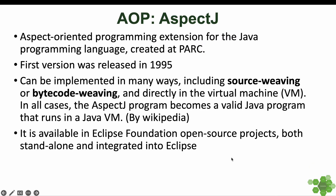Welcome back guys to Java Space. In this video, we are going to talk about AspectJ. AspectJ is an aspect-oriented programming extension for the Java programming language, and it was created at PARC. The first version of this was released in 1995.